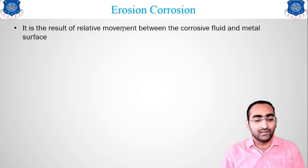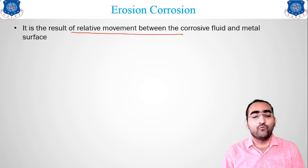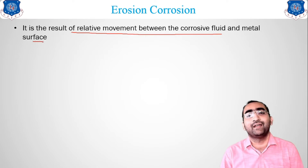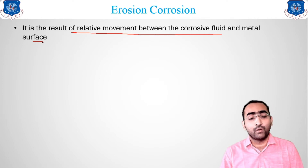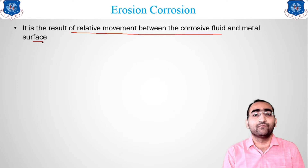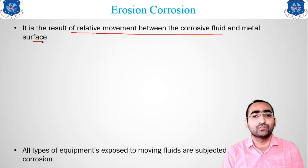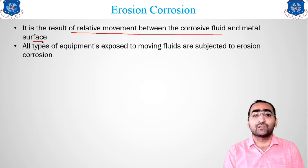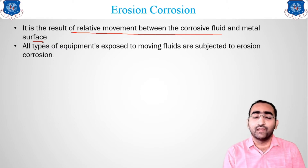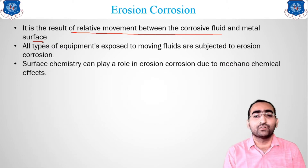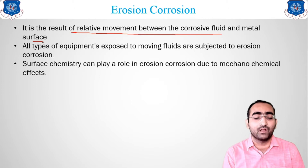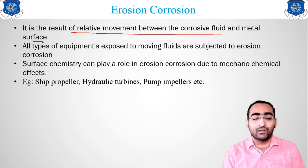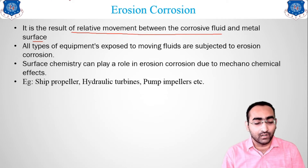Erosion corrosion is the result of relative movement between a corrosive fluid and the metal surface. All types of equipment exposed to fluid have major chances of erosion corrosion occurring. Surface chemistry plays a role in erosion corrosion due to the mechano-chemical effect. Examples include ship propellers, hydraulic turbines, and pump impellers — all in constant contact with water.